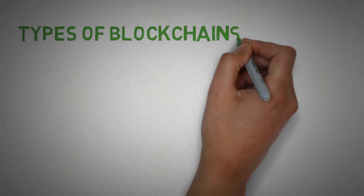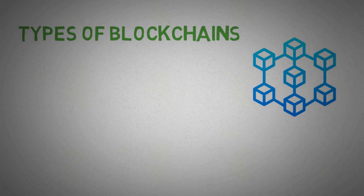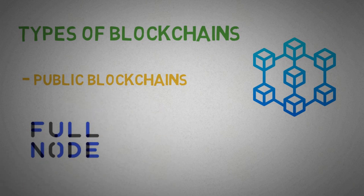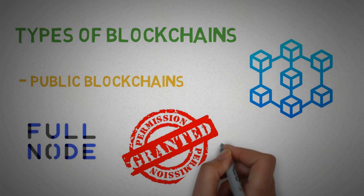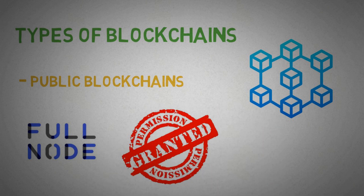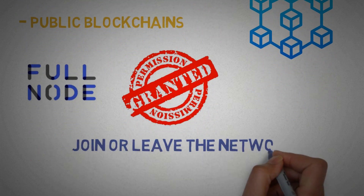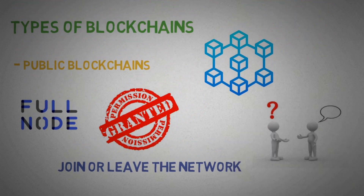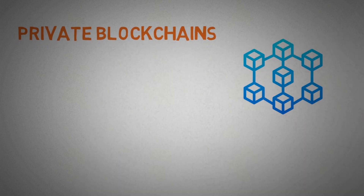Now, the types of blockchain. Blockchains are of two types. First, public blockchains — these are blockchains where anyone can create a full node and become a network validator. On public blockchains there is no requirement to ask permission from anyone, meaning any node can join or leave the network at any time without permission.